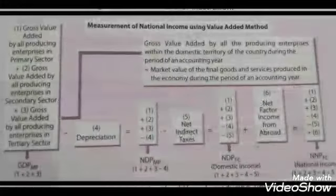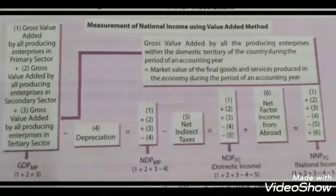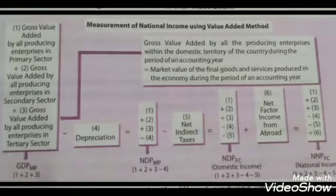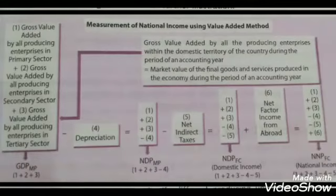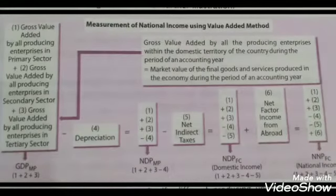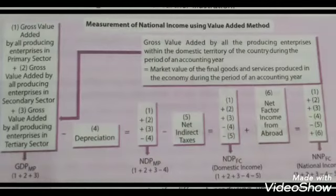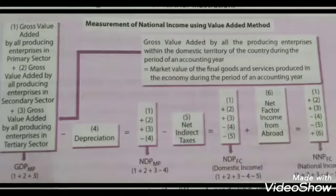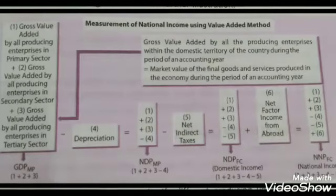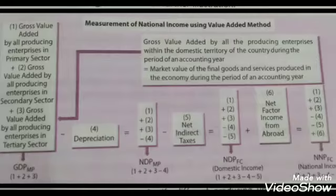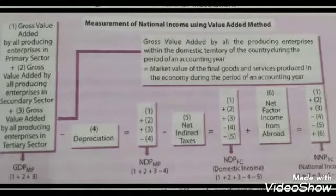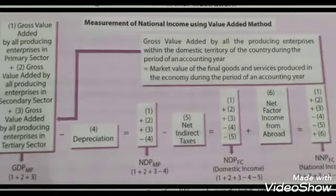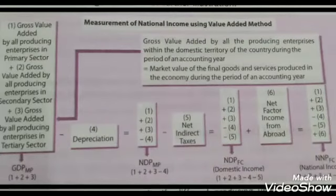The procedure of the value added method is: once you add all the values of the different sectors you get GDP at market price. From GDP at market price, when you deduct depreciation you get NDP at market price. From NDP at market price you deduct net indirect tax to get net domestic product at factor cost. When you add NFIA — net factor income from abroad — you get NNP at factor cost, which is national income.